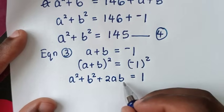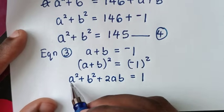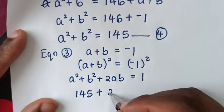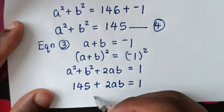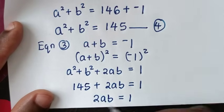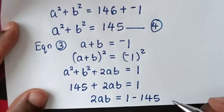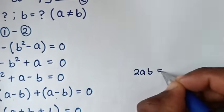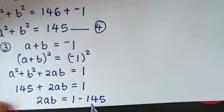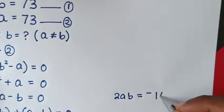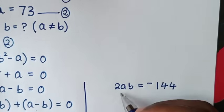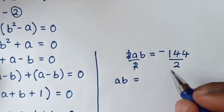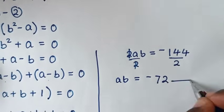Now we'll find ab. We substitute the value of a squared plus b squared from equation 4, which is 145. So 145 plus 2ab equals 1. Therefore 2ab equals 1 minus 145, which is negative 144. Dividing both sides by 2 gives ab equals negative 72. We'll call this equation 5.